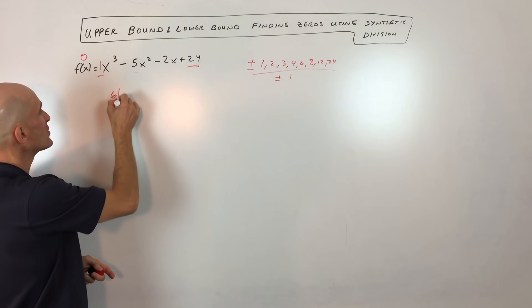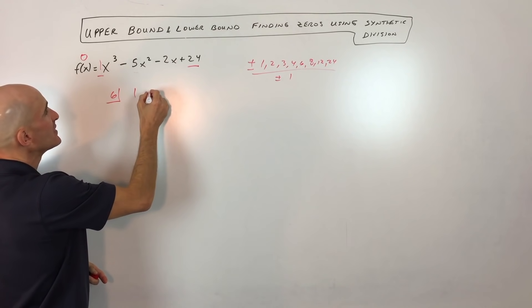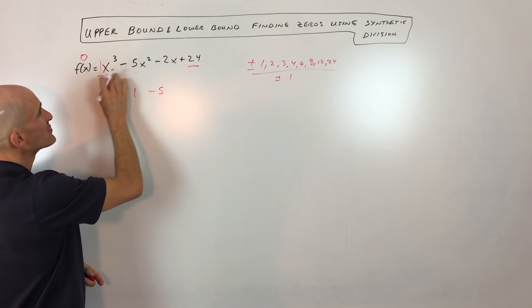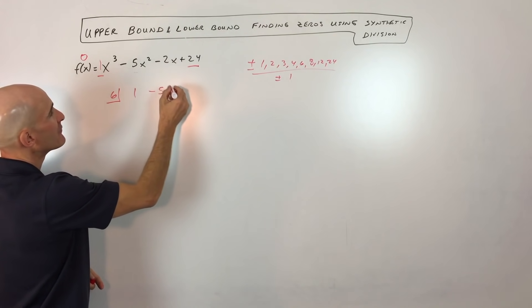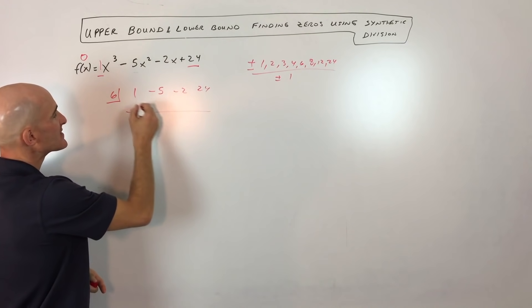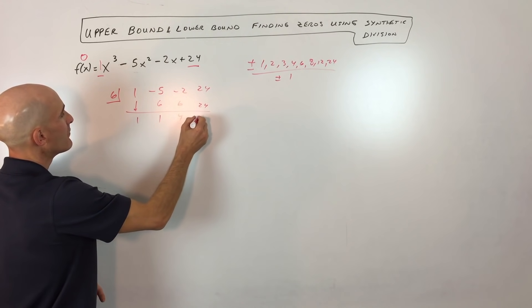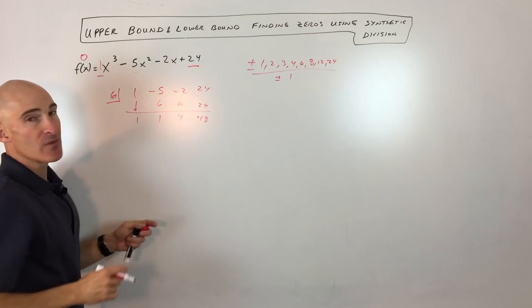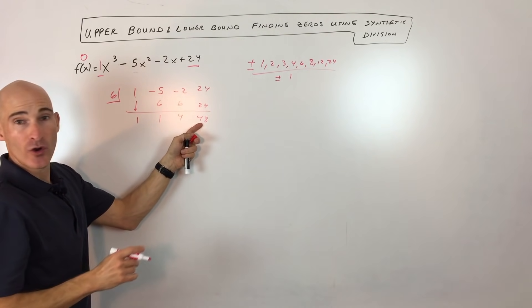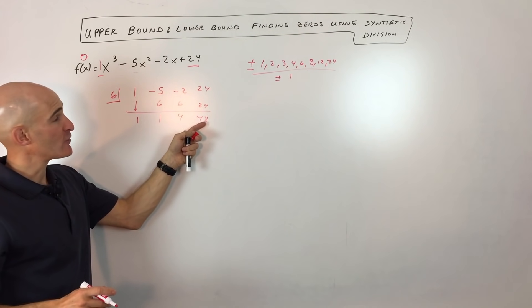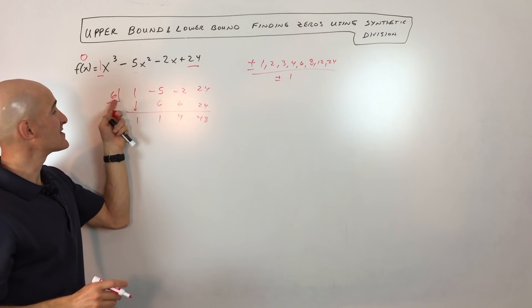So let's go ahead and do the synthetic division with six. Again, we're using the leading coefficients here. The numbers in front of the variable. So we've got 1, negative 5, negative 2, 24. And we're just doing that synthetic division. I've got other videos about this if you need to review this concept. But what you can see is I tested to see if six was a zero. The remainder here ended up coming out to 48. It wasn't zero. So that tells me that six is not a zero.